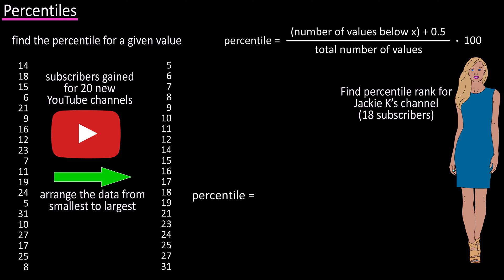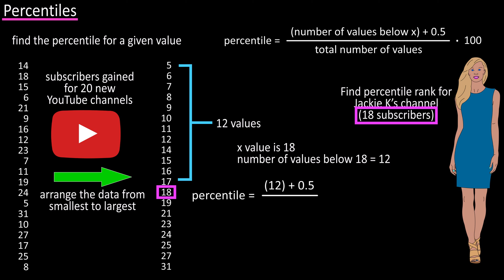Next, we substitute into the formula. So, our X value is 18, and we need to find the number of values in the data set below 18, which is 12. Plug that in, add 0.5, and divide that by 20, the number of values in the data set, and multiply by 100.